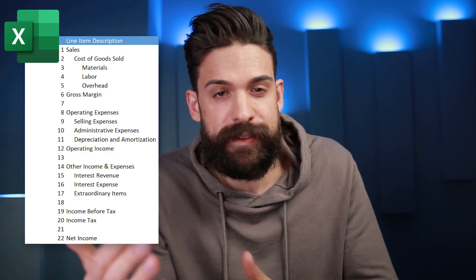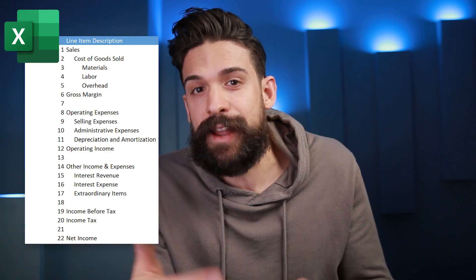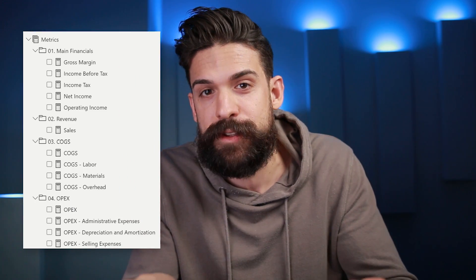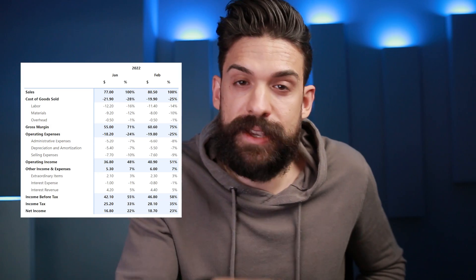Let's have a look at how we can build a financial statement using a calculation group. In a previous video we built a financial statement using an input template that gave us the structure, then we calculated all the measures to display on the financial statement, and one main measure that pulls in all the values in the right places with the right formatting. That was a very flexible approach, however it took a little time to set up. Now in this video we're going to see if we can get a similar result using calculation groups and see if it's easier.